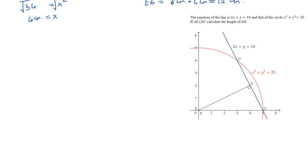The next problem: the equation of the line is 2x plus y equals 10, and the circle is x squared plus y squared equals 25. If AE is perpendicular to DC, calculate the length of DE. One way is to find the intersection points — one point is already given at (5, 0).